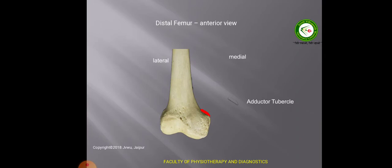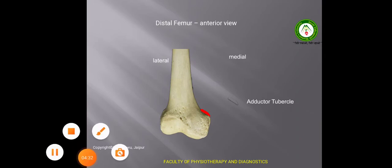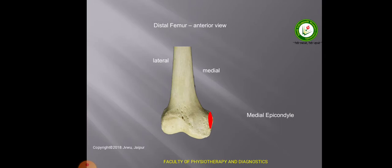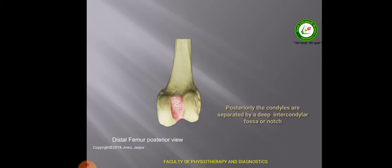Above the medial condyle we have a tubercle known as the adductor tubercle, which gives attachment to the adductor magnus muscle. This is the medial epicondyle — epicondyle means the most convex point of a condyle — and it lies on the medial condyle. On the posterior surface of the lower end of the femur, we have the intercondylar area or intercondylar fossa between the two condyles.